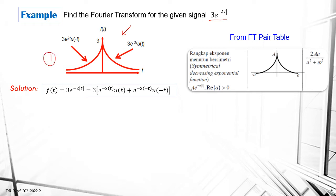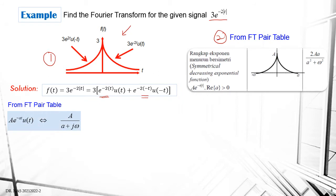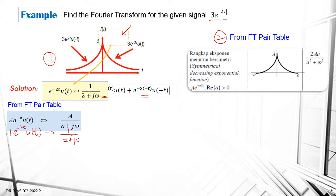There are two methods to solve this. Using the first method, you consider that this equation includes two components: one on the left-hand side and one in the positive t region. From the table, if you have a single component a·e^(−at)·u(t), compare with the given equation. For the first component, 1·e^(−2t)·u(t), your small letter a is 2 and capital A is 1, so it becomes 1/(2 + jω). The same applies to the other component.